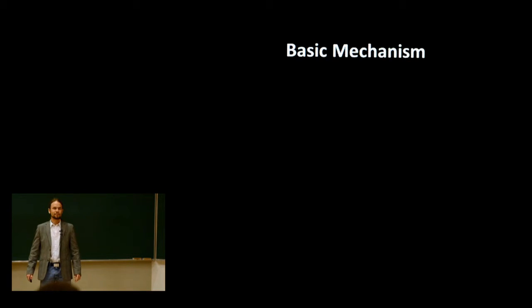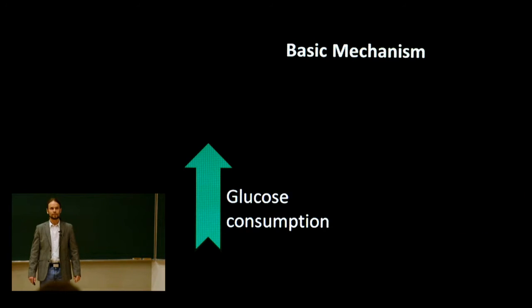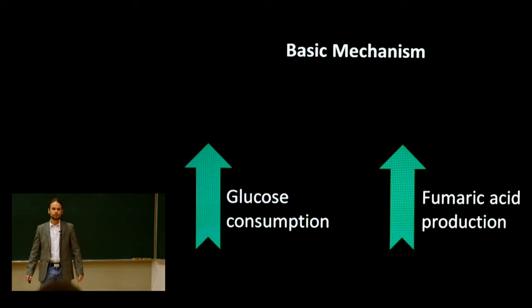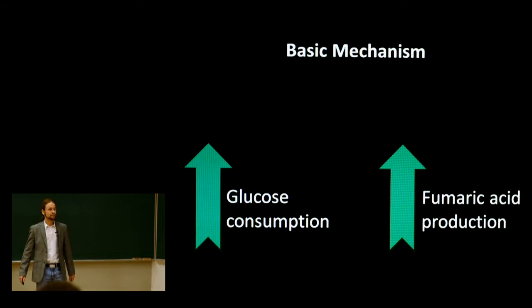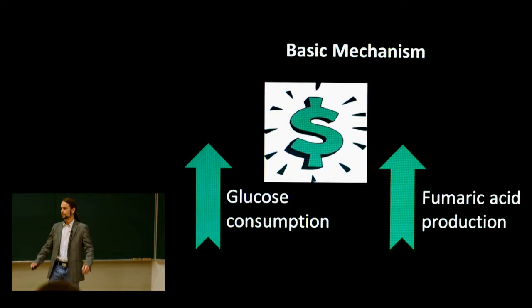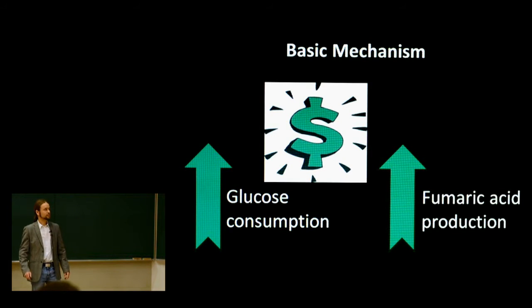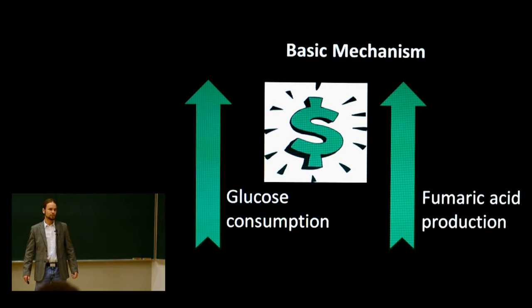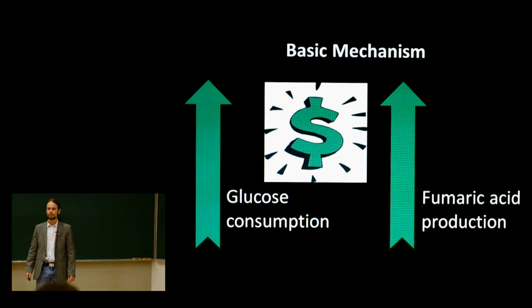The basic mechanism of this fungus is: the more glucose it consumes, the more fumaric acid it produces. However, currently the rate of glucose consumption is relatively low for this fungus. So if we want to make money from this process, which of course we all do, we have to convince it to consume glucose at a quicker rate. According to a group of Chinese scientists, this can be done with the addition of citrate.